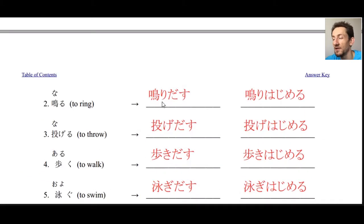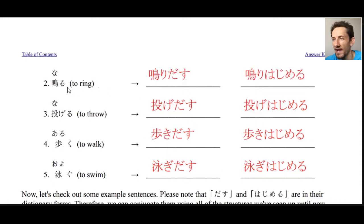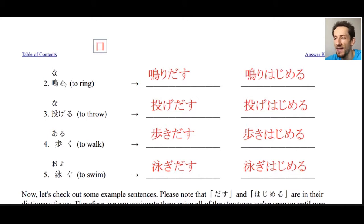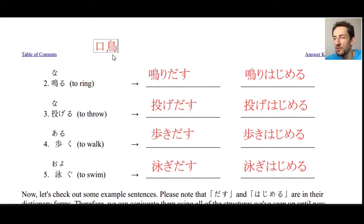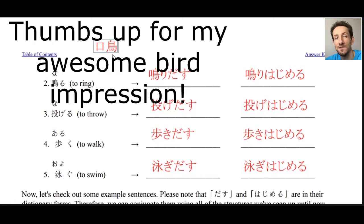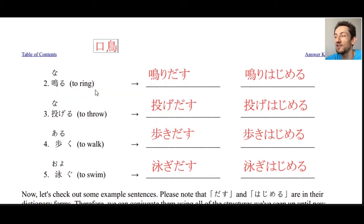Number two: naru — naridasu and narihajimeru. I want to quickly mention this character. Naru is made up of two parts: the left side is kuchi, meaning mouth, and the right side is tori, meaning bird. Put together — a mouth and a bird — you get the meaning to ring, like a cell phone can ring. If that helps you remember how to write naru: mouth plus bird equals to ring. So narihajimeru.